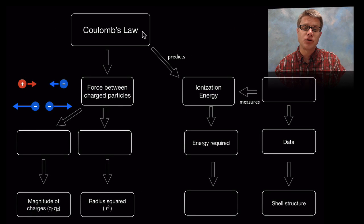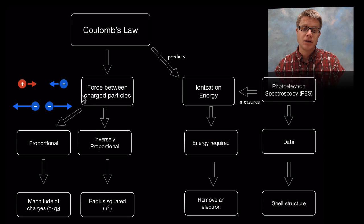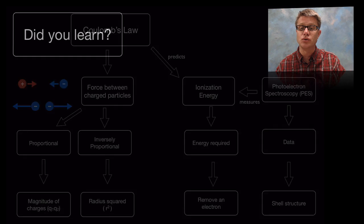So could you fill in this concept map? Coulomb's law is the force between charged particles. And how is that related to their magnitude and radius squared? Could you fill in those two blanks? And what is that technology do you remember that measures ionization energy? And then what is ionization energy? It's the energy required to do what? Let's see. So it's the force between charged particles is proportional to the magnitude. In other words just multiply the charges. Inversely proportional to the radius squared. That technology is called photoelectron spectroscopy. And then ionization energy is the amount of energy required to remove an electron.